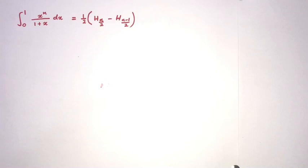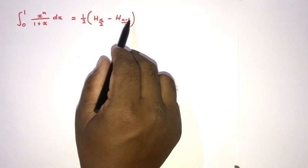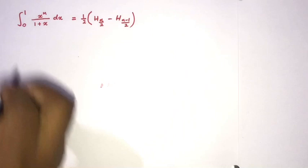Welcome to the mathematics channel. In this video, we are going to solve this advanced interesting integral: the integral from 0 to 1 of x to the n over 1 plus x dx, which is equal to one half h(n/2) minus h((n-1)/2). Here h_n denotes the harmonic number.